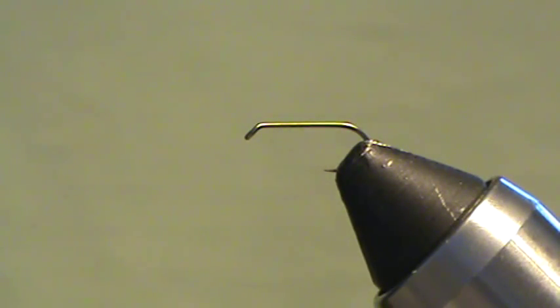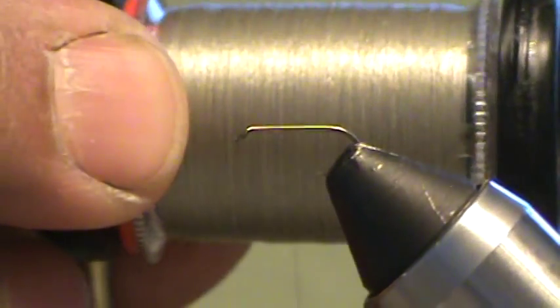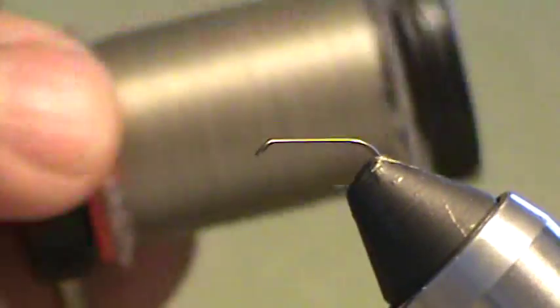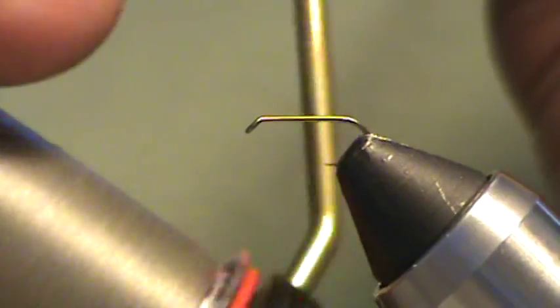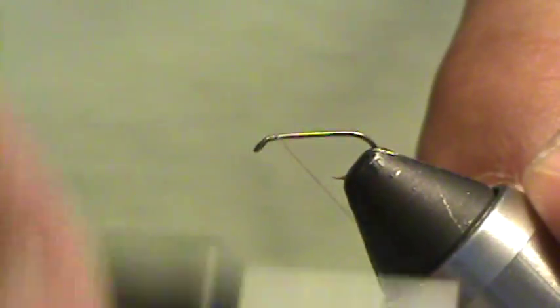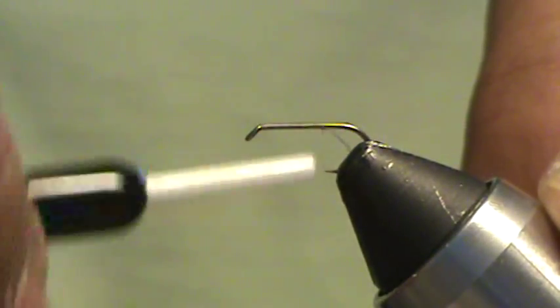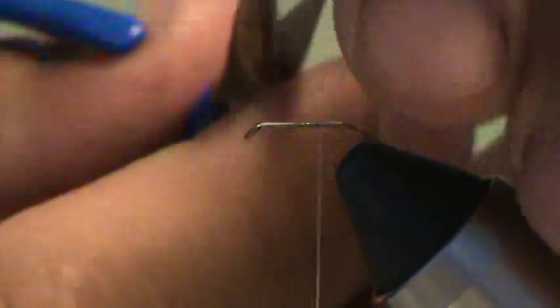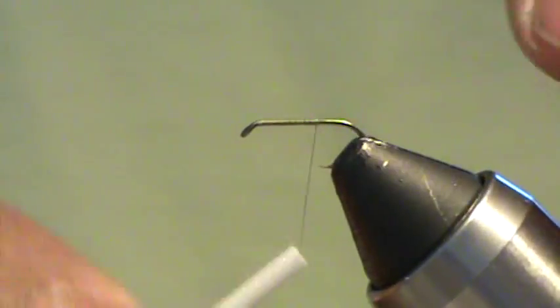So let's get started. I'm going to use a gray olive thread - this is Benekchi, however you want to pronounce it, 12-watt thread. Start my thread up at the eye and make a thread base, trim away the waste.